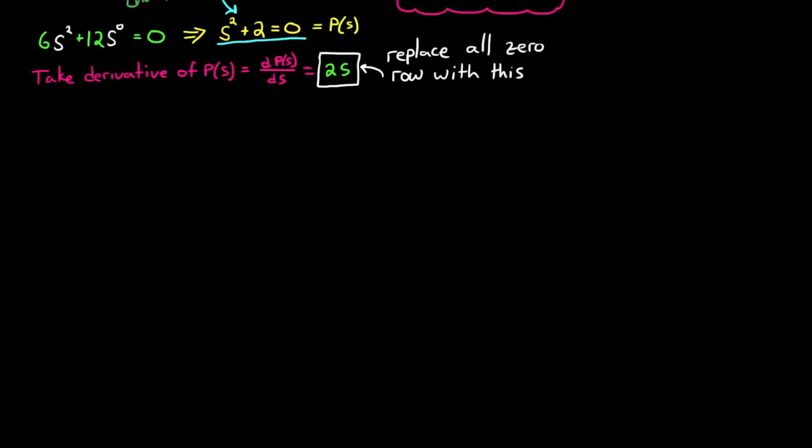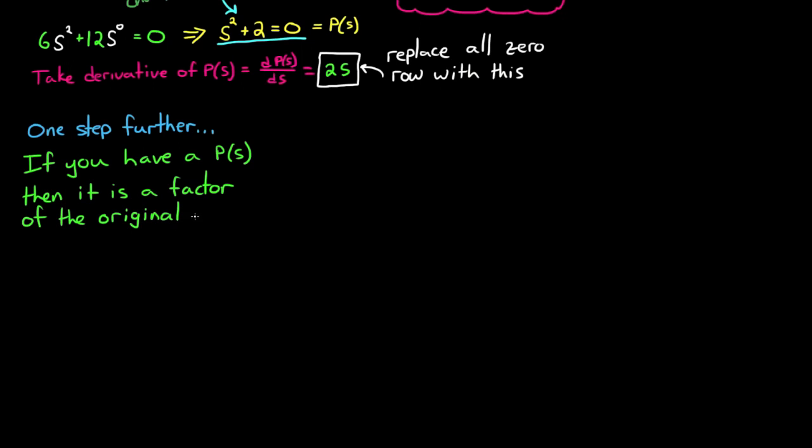But we can take this one step further still. If, and only if, there is a row of all 0's in your Routh array, then the auxiliary polynomial exists, and that auxiliary polynomial divides into the original polynomial with no remainder left over. That means that this is a factor of the original polynomial.